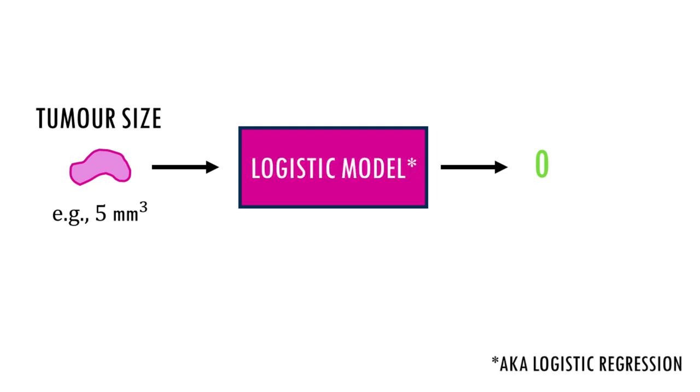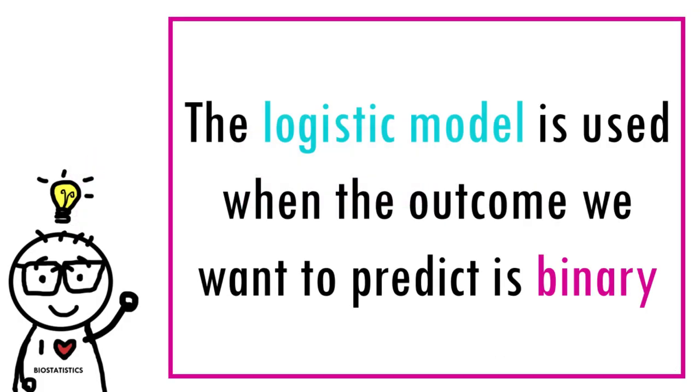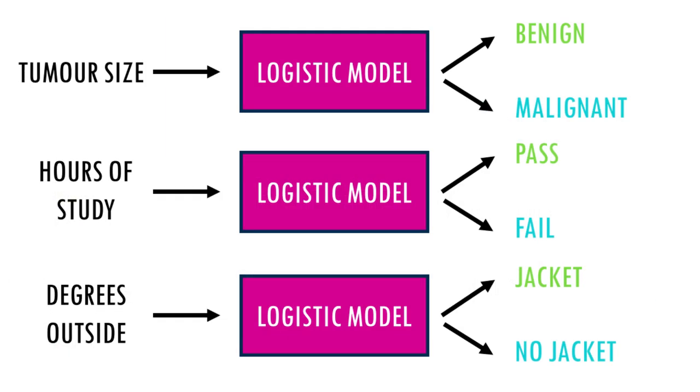It's basically used when the outcome we want to predict is binary, two values 0 and 1. There are many examples and uses of logistic regression but we're going to stick with the tumor size to predict malignancy.